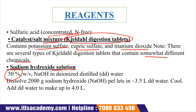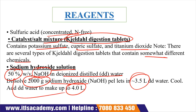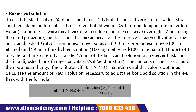Sodium hydroxide is prepared as a 50% weight-by-volume solution in deionized distilled water. To prepare it, take 2000 grams of sodium hydroxide pellets, dissolve into 3.5 liters of deionized distilled water, and after cooling make up the volume to 4.0 liters. This yields a 50% NaOH solution. You can also prepare NaOH according to your specific needs.